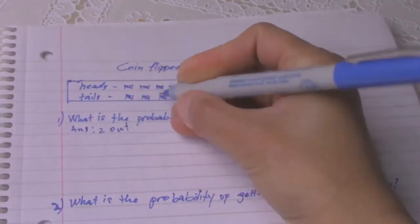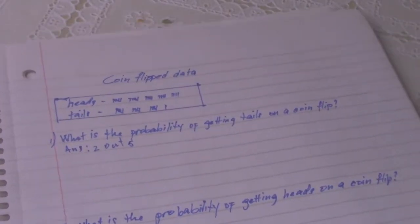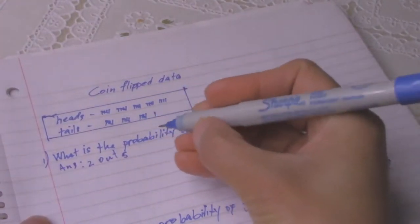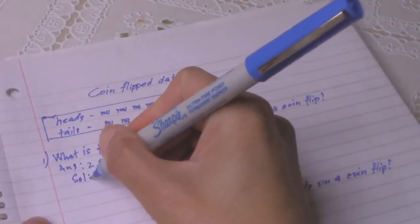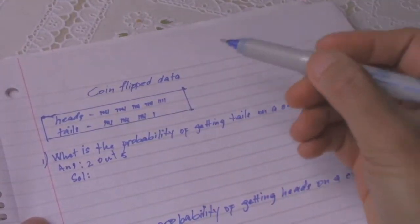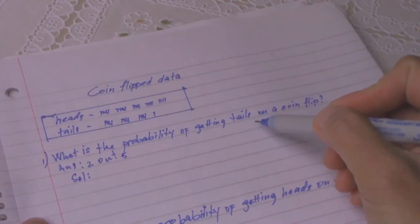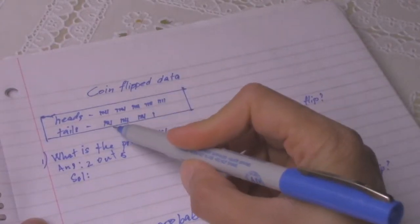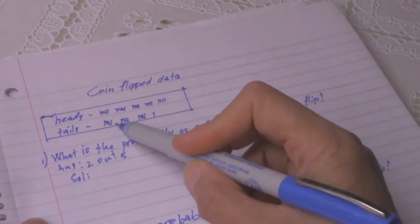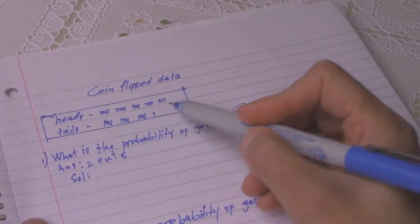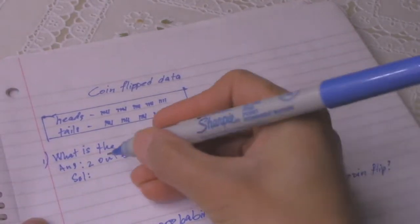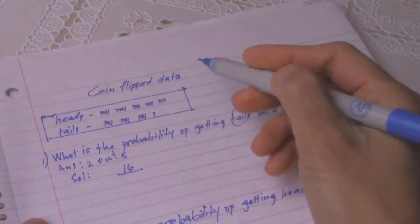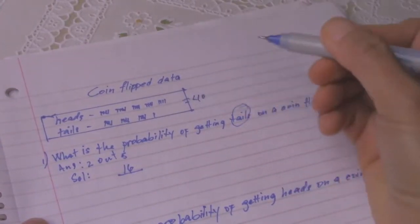So this is how we get the solution. Since you need to get the tails, the question is about tails, so you will put the tails on the top. You'll count the tails: 5, 10, 15, 16. So you'll put the 16 on the top, and then you'll count them together, that is all 40 altogether, and you will put it in the bottom.